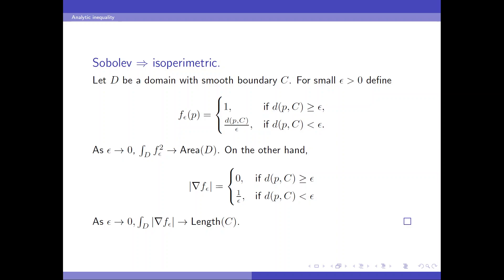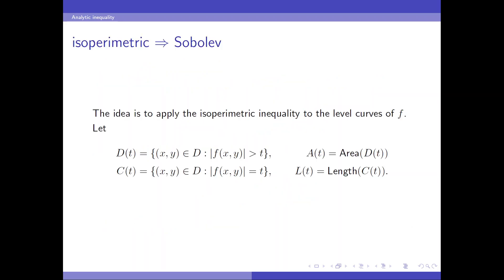So the integral of L1 of the gradient approaches the length of the boundary curve as epsilon goes to 0. So from here we see that Sobolev inequality implies isoperimetric inequality. For the other direction, we apply the isoperimetric inequality to the level curves of a given function f. We let A(t) be the area of this superlevel set and L(t) be the length of the level set.